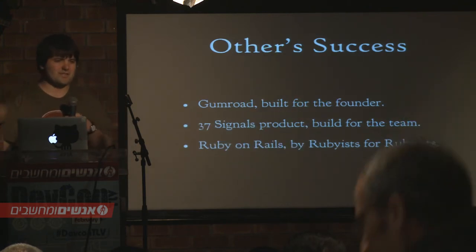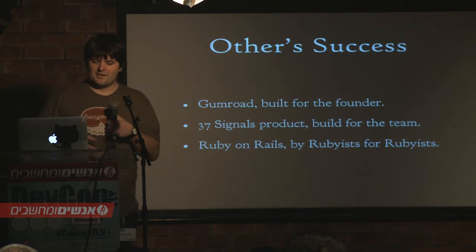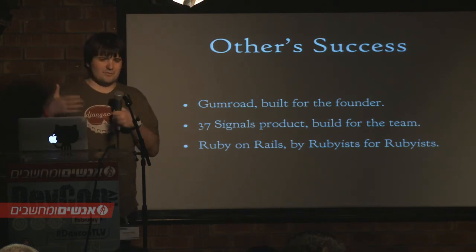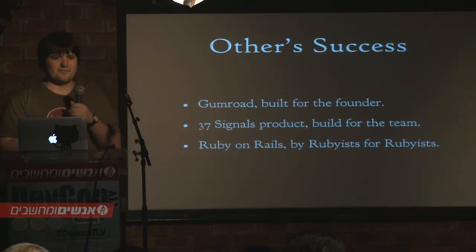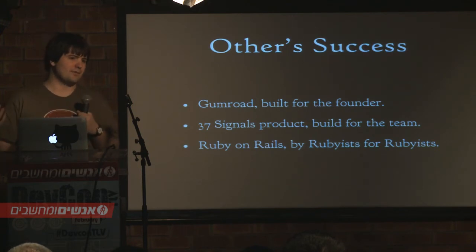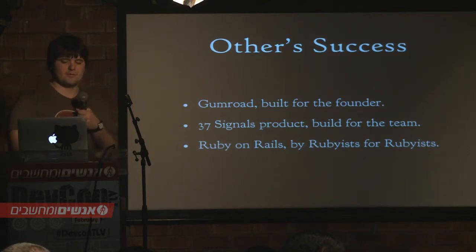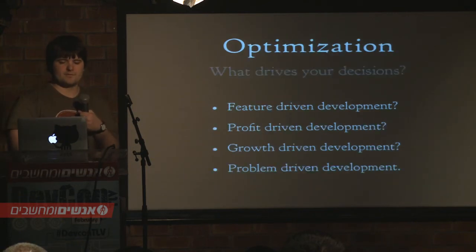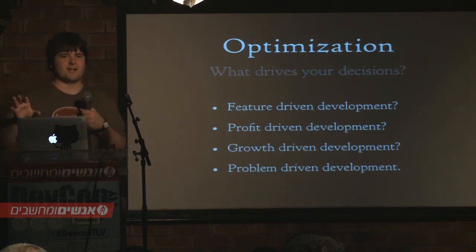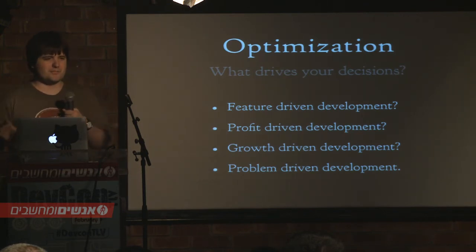Gumroad does the same thing, 37signals. They do a bunch of consultancy stuff, so they built Basecamp to manage all their projects for themselves and just let other people use it — and it was tremendously successful. Same thing with Ruby on Rails — they were doing all these Ruby apps and they wanted to build something that streamlined the whole thing. They weren't trying to own the market share or engineer something. They were trying to build something that they wanted to use.